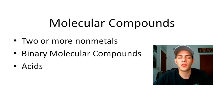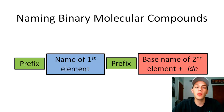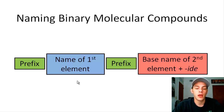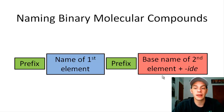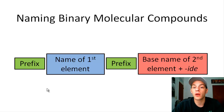To name any binary molecular compound, you're going to take the name of your first element and follow it with the base name of your second element plus the suffix -ide. Before each of these names, you're going to include a prefix. The prefix tells the reader how many atoms of each element are in the molecular compound.